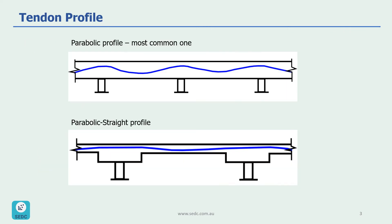Let's look at tendon profiles along the slabs or beams. We might have different tendon profiles depending on the design and loading conditions. Here you can see two profiles: one with a parabolic shape and the other with a parabolic-straight profile, which can be used for a slab with a drop panel at the column strip or for a slab with band beams.